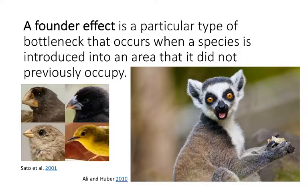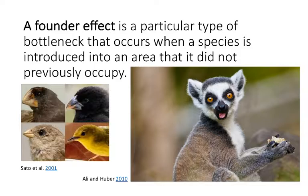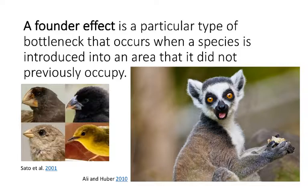One particular type of bottleneck is a founder effect. That happens when a species is introduced into a new area that it did not previously occupy — they're founders of that population. This is a bottleneck because if you only have a few individuals going to this new site and starting this new population, you're essentially starting that new population with whatever genes those few individuals happen to have.